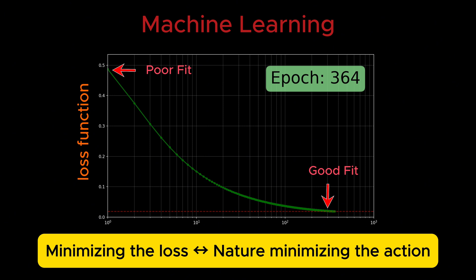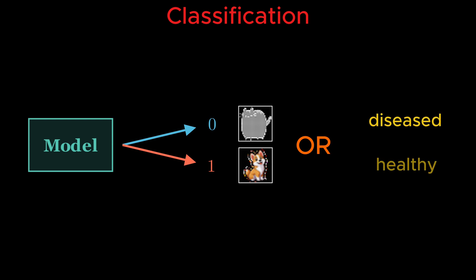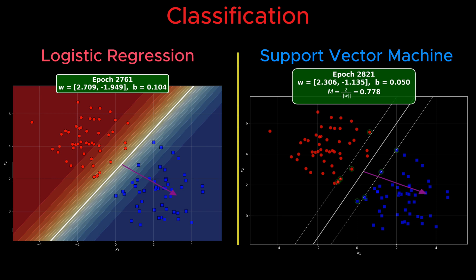To make this concrete, let's focus on classification as one of the most common problems in machine learning. It is teaching a model to distinguish between two categories, say, cat versus dog or diseased versus healthy. Two common algorithms for this are logistic regression and support vector machine, SVM.